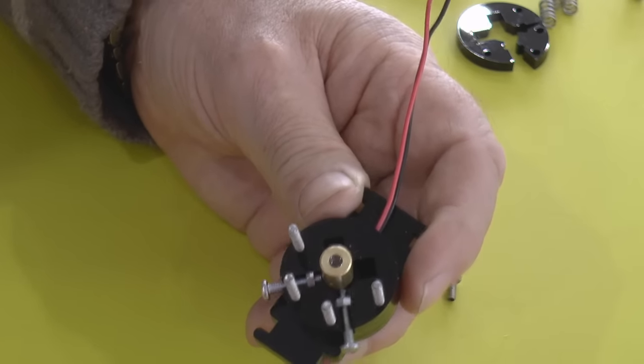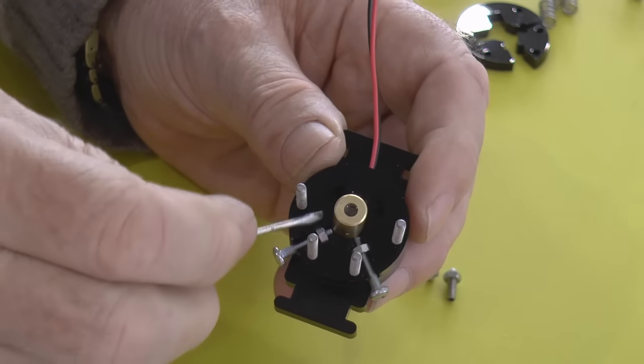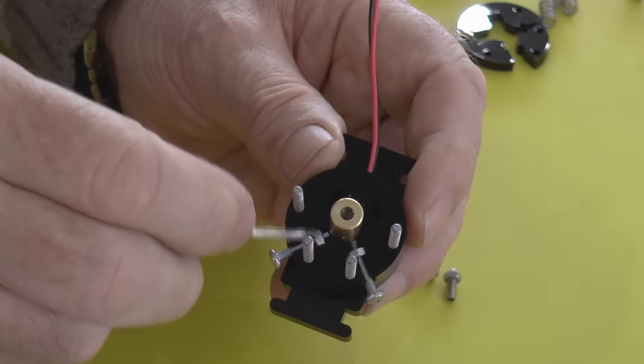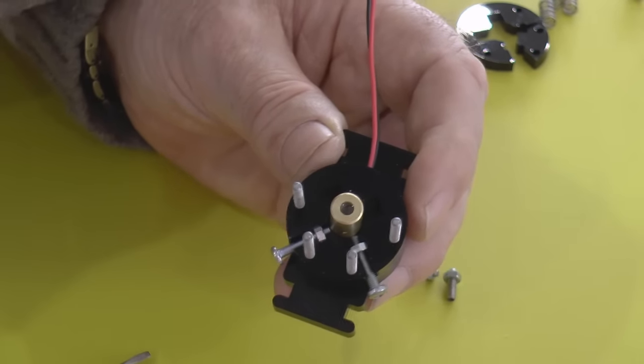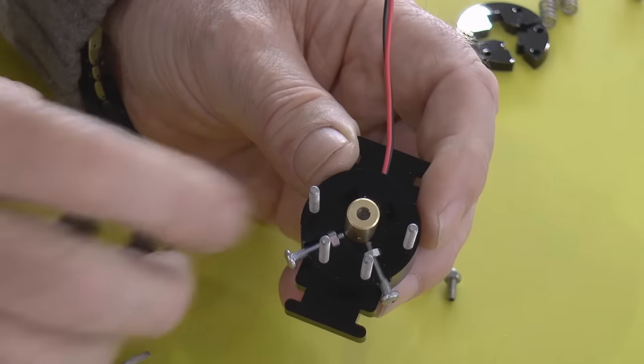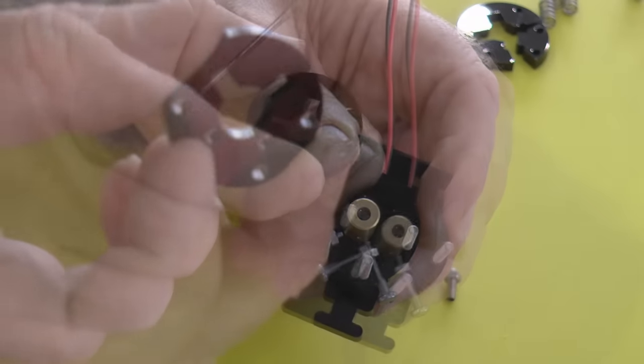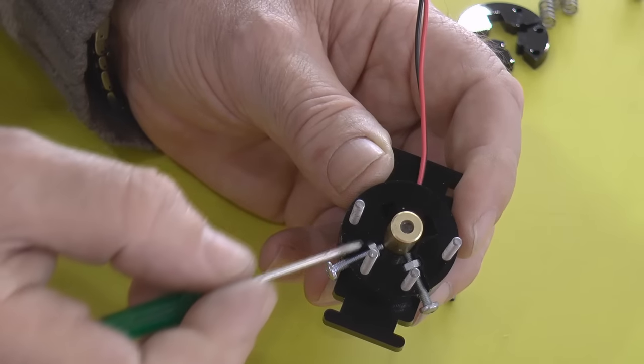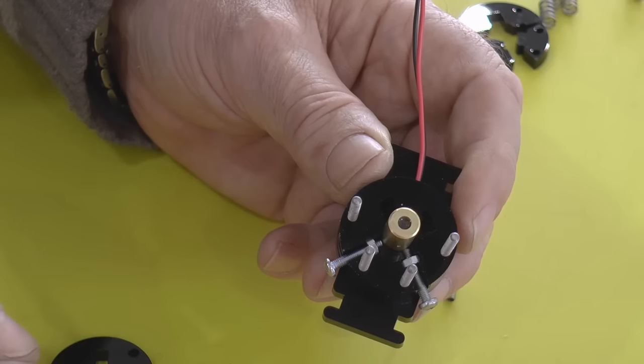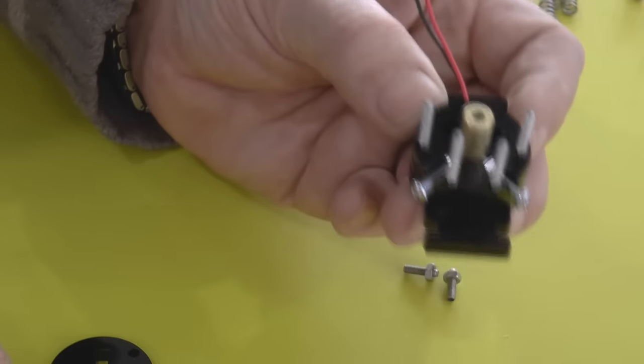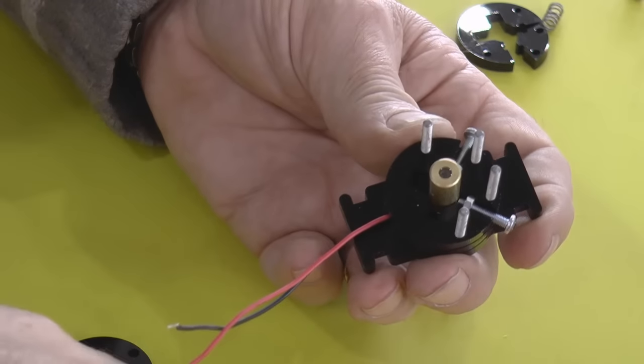So now we've got two nuts sitting in there which can't rotate because the flats are locked against these surfaces. The next piece has a couple of little square holes designed to sit over the pointy bit on the corner of the nut. But before we do that we've got to put in our first pair of springs.